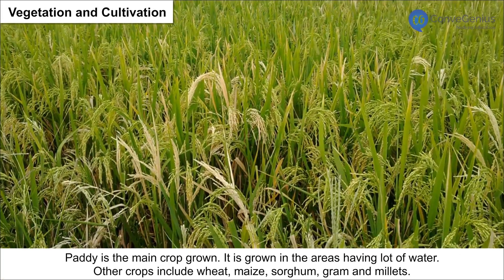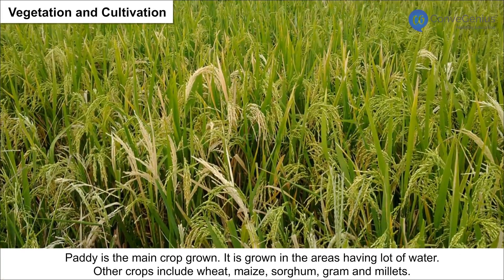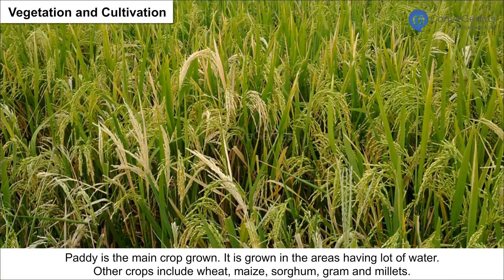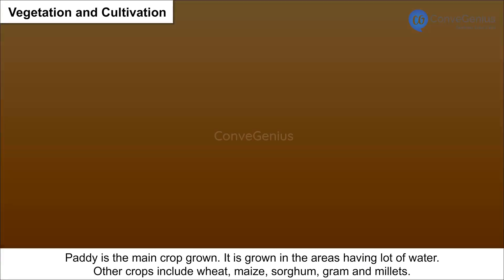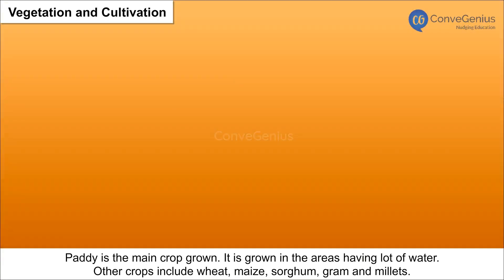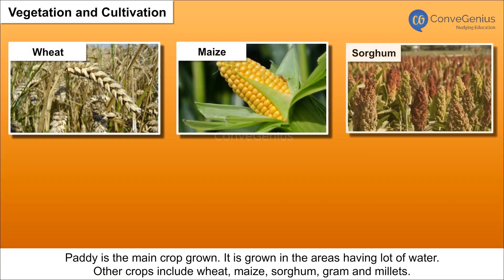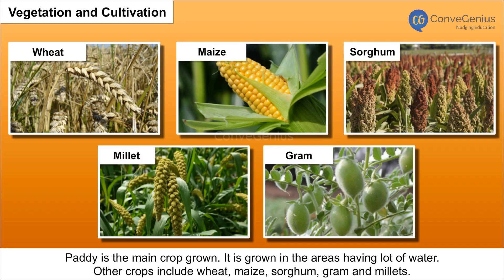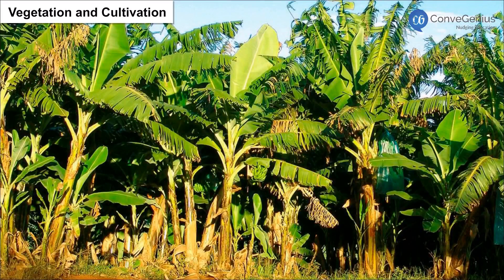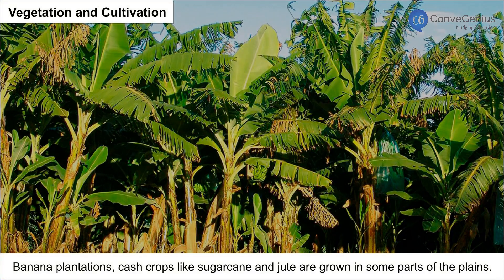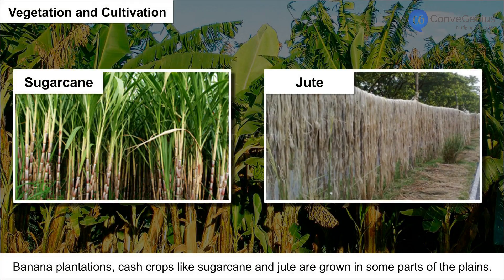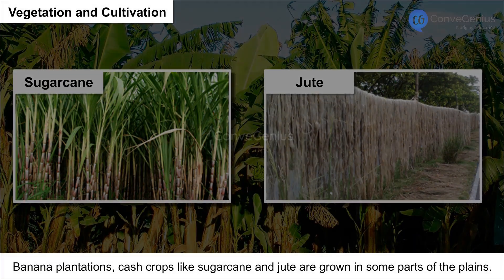Plains are very fertile and are used for agriculture. Paddy is the main crop grown in areas having a lot of water. Other crops include wheat, maize, sorghum, gram and millets. Banana plantations and cash crops like sugarcane and jute are grown in some parts of the plains.